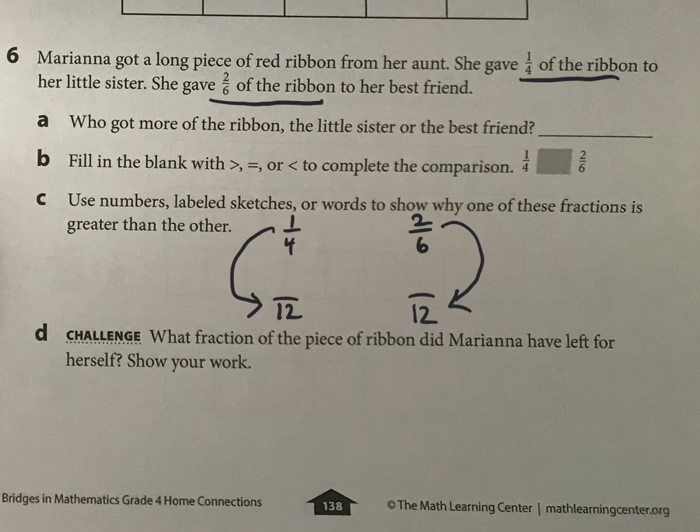So one fourth in twelfths, four times three is twelve. So that means I'm going to have three twelfths as an equivalent. How about six to twelfths? That's times two. So that's what I have. So this would be what?